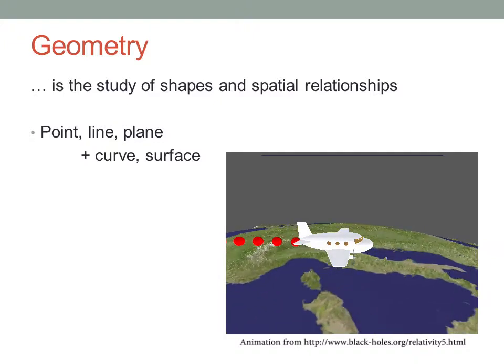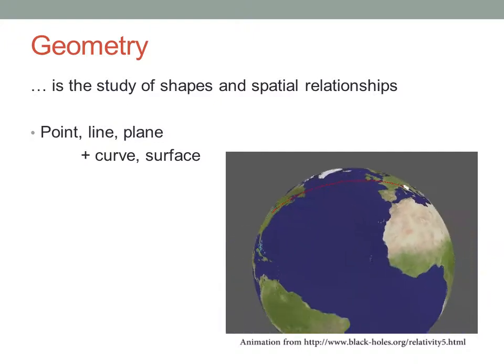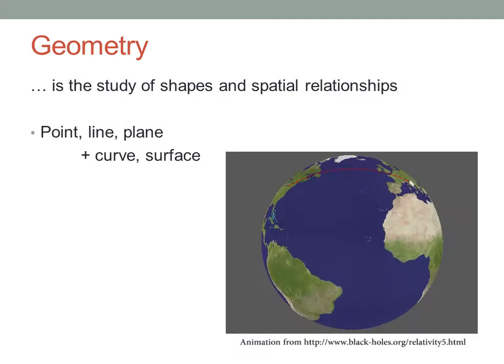If we're limited to travelling on or near the surface, then the shortest path between two cities will be a curve. It looks like a straight line if you're on the path, but in fact it's a curve through space across a non-flat surface.